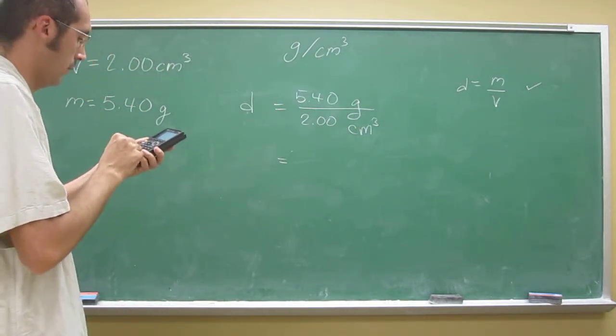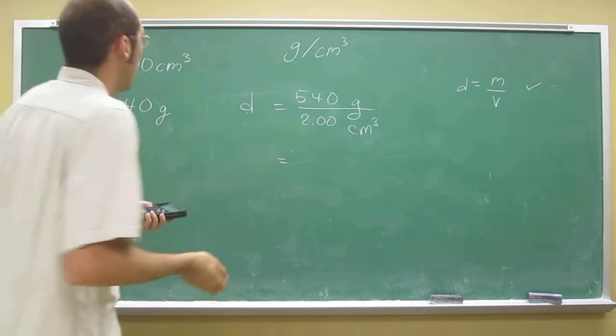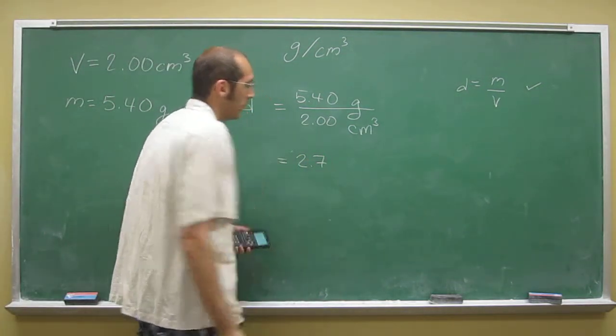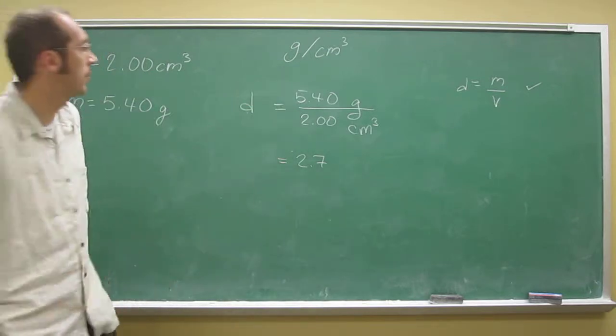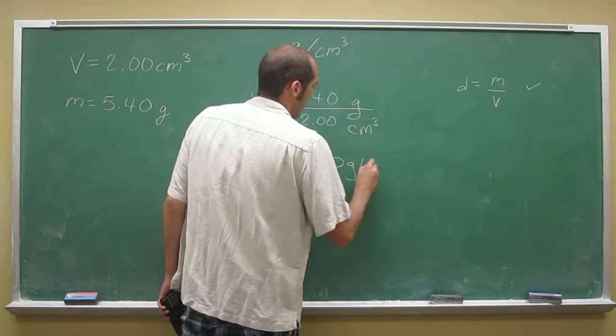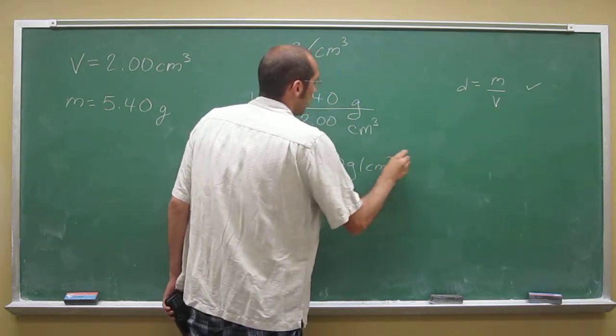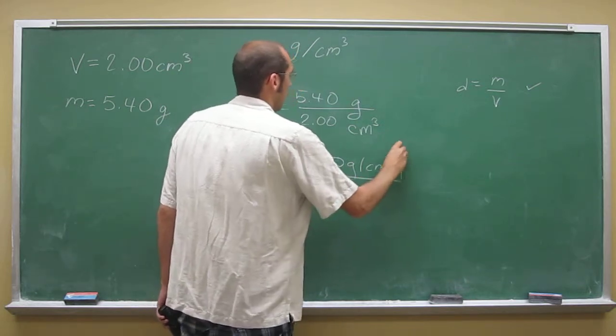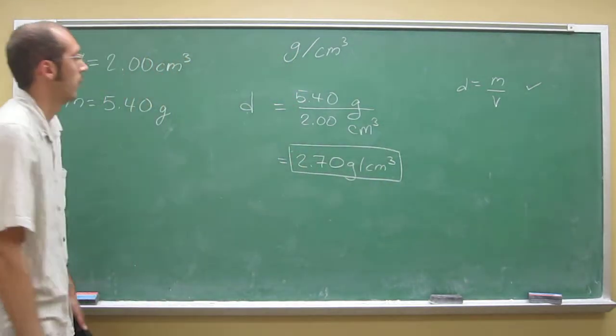5.40 divided by 2 gives you 2.7 on the calculator. But remember, 3 significant figures, so we're going to write 2.70 grams per centimeter cubed. That's the preferable way to write the final answer.